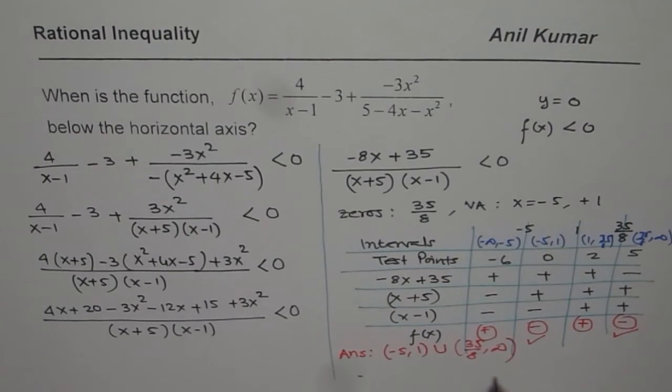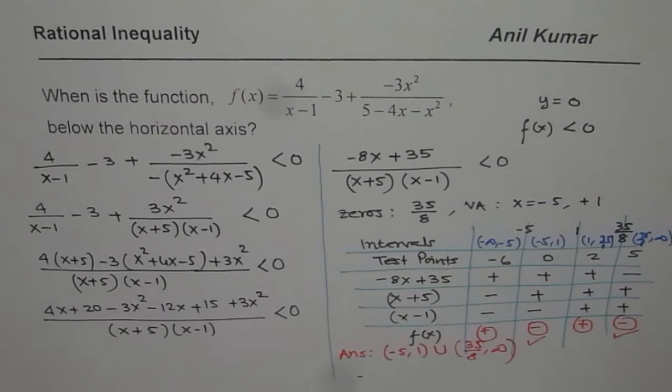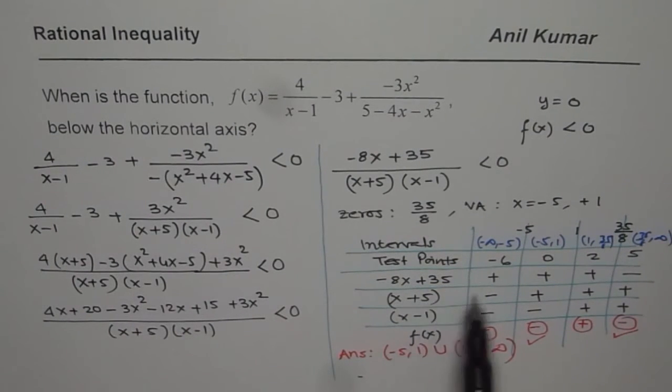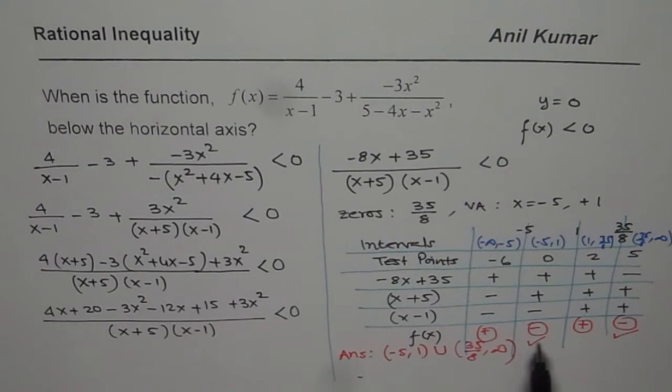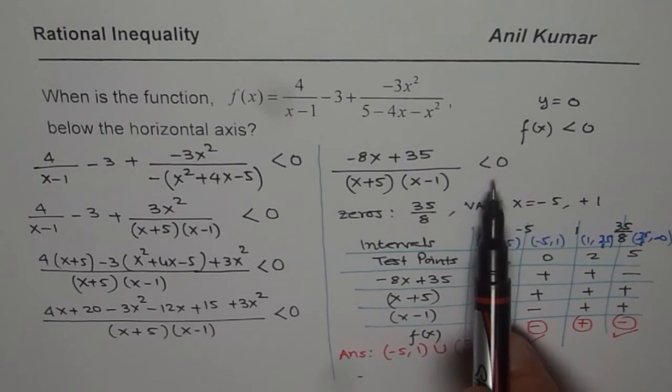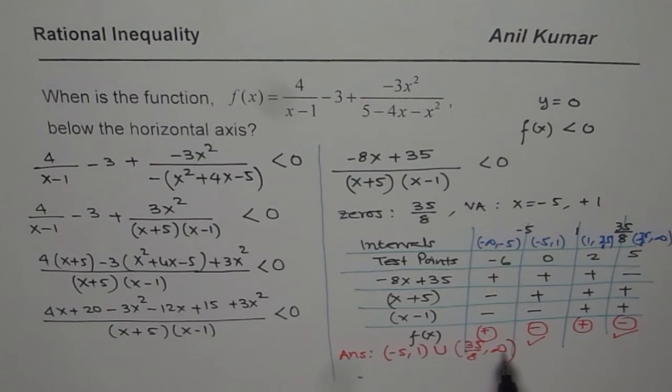So that is how we can solve such a rational inequality. So the idea here is to factor each individual, combine the terms, and then with the help of this table, where you write sign of each factor, you can figure out when is the function negative or positive. Since we are looking for less than 0, so whenever the product of these three is negative, that will be our solution. I hope that helps. Thank you and all the best.